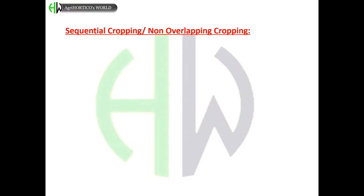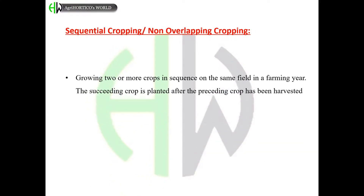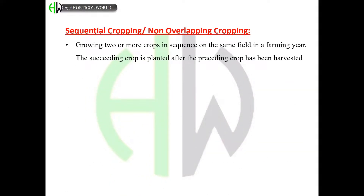Sequential cropping, also called non-overlapping cropping, involves growing two or more crops in a sequence on the same field in a farming year. The succeeding crop is planted after the preceding crop has been harvested. Crop intensification is only in the time dimension, and there is no intercrop competition.